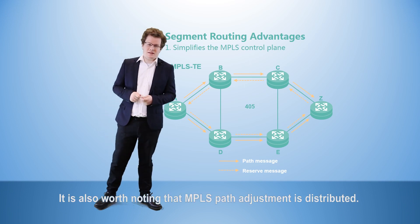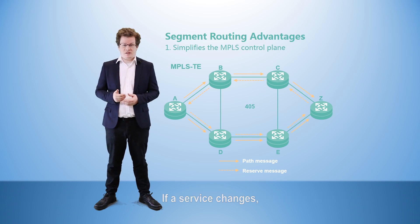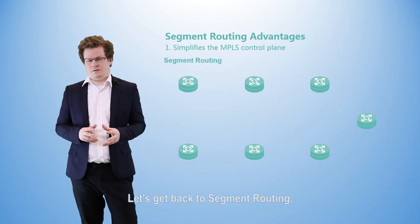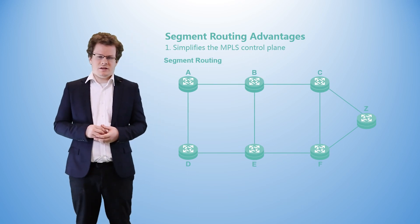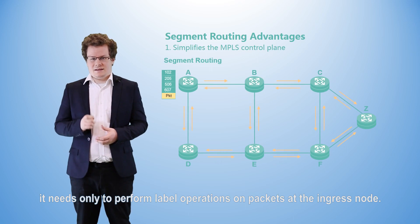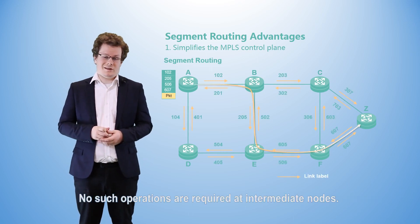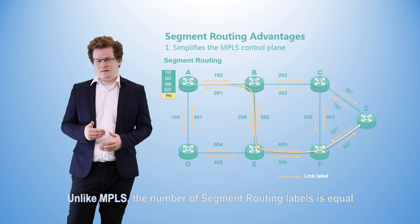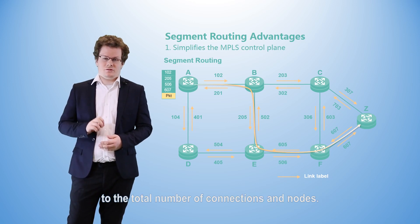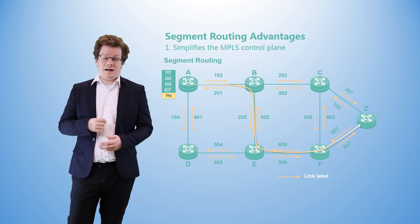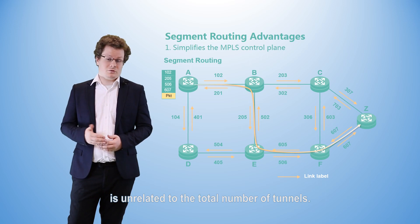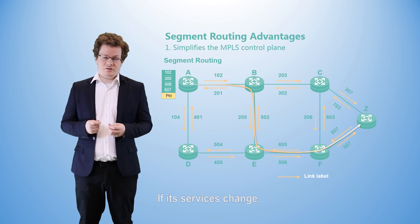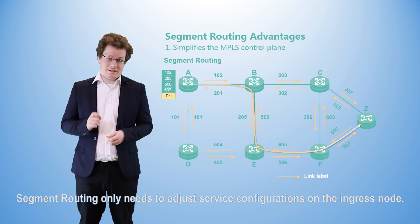It is also worth noting that MPLS path adjustment is distributed. If a service changes, MPLS must adjust the configuration of every individual node. For segment routing to control service paths, it needs only to perform label operations on packets at the ingress node. No such operations are required at any intermediate nodes. As a result, pressure at the control plane is minimal. Unlike MPLS, the number of segment routing labels is equal to the total number of connections and nodes, and is unrelated to the total number of tunnels. In segment routing, path adjustment is centralized — if services change, segment routing only needs to adjust service configurations at the ingress node.